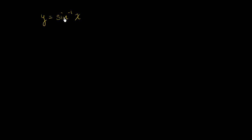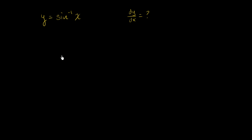First hint: we don't know what the derivative of inverse sine of x is, but we do know what the derivative of the sine of something is. So maybe if you rearrange this and use some implicit differentiation, maybe you can figure out what dy/dx is. Remember, finding dy/dx is our goal. So I'm assuming you've had a go at it, so let's work through this together.